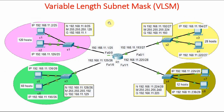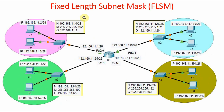So in variable length subnet mask, when we need different host counts — suppose one network needs 120 hosts, another needs 60, another needs 28, and another needs 12 — the requirement is different, so we use variable length subnet masking. And where do we use fixed length subnet masking? Suppose on all networks we want 60 systems — all our labs should have 60 systems — then we use fixed length subnet mask. We will be going into great detail, giving different examples of FLSM and VLSM concepts.